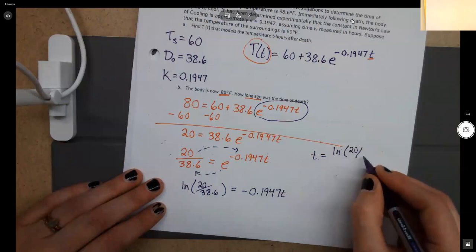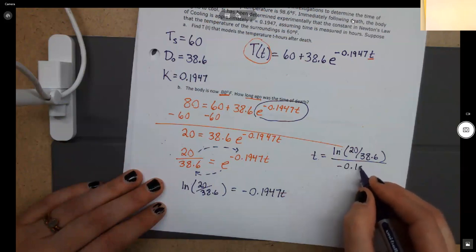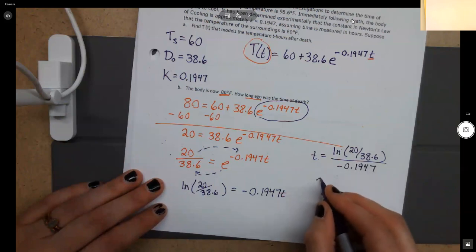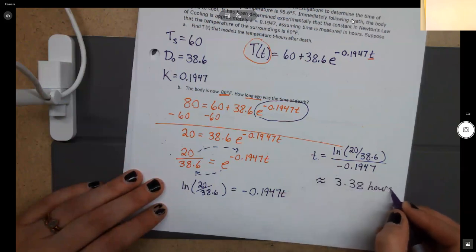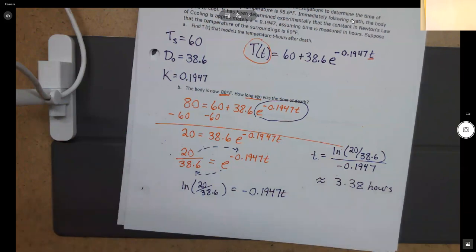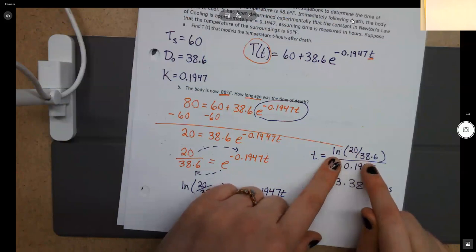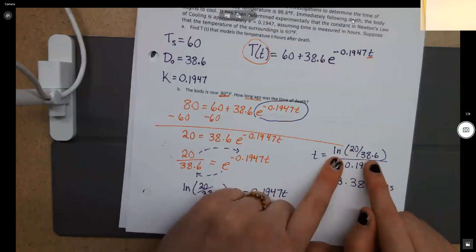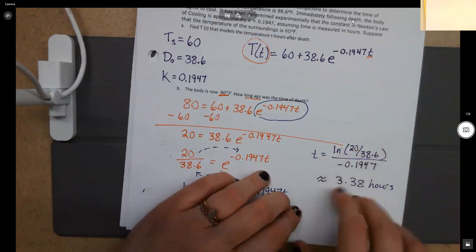So hopefully, we should get that for our answer, which if you plug that into your calculator correctly, you should get about 3.38 hours, or 3.4, whatever, however you round it is cool. That's a wonderful question. So the natural log of 20 divided by 38.6 is going to be a value that's less than 1, which means the answer is going to be a negative exponent. So you'll actually end up with a negative on top and a negative on bottom, and they'll cancel out to give you a positive answer.